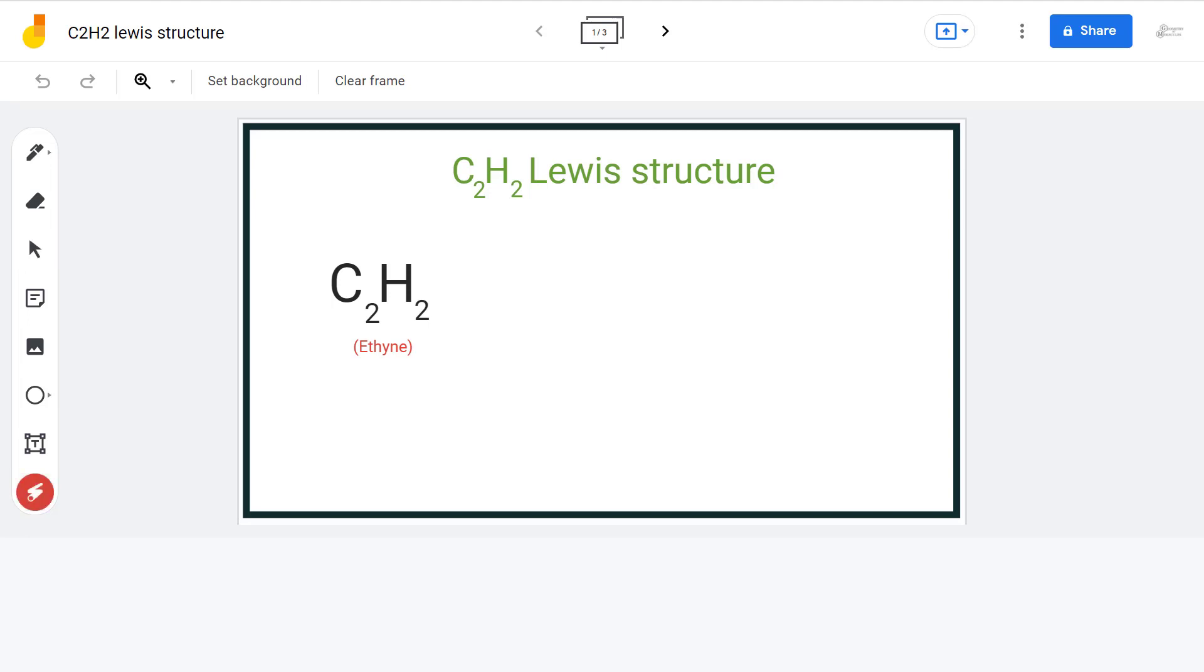Hello guys, welcome back to our channel. In this video we will discuss the Lewis structure of C2H2 molecule. It is the chemical formula of Ethyne, also known as Acetylene.